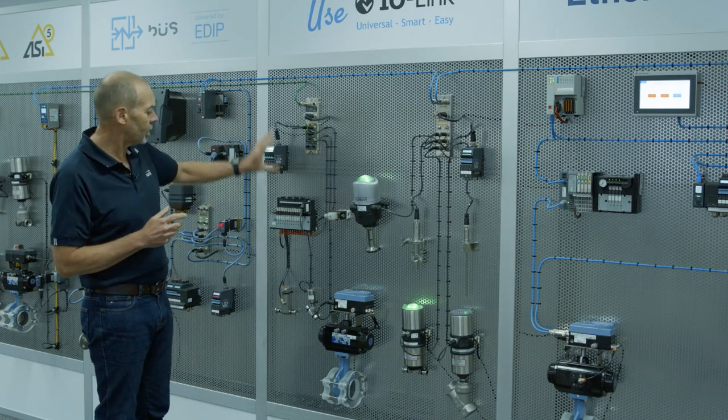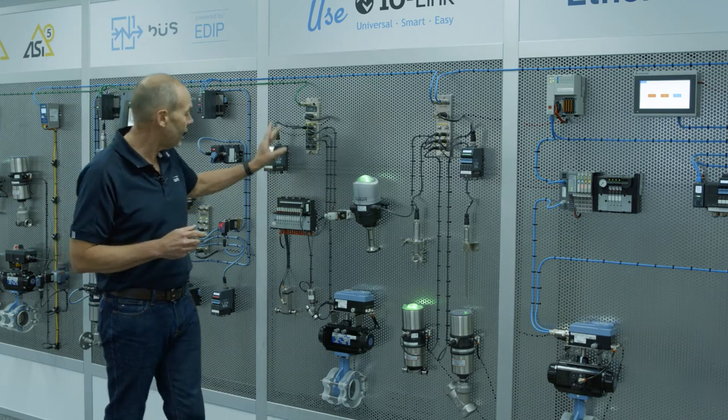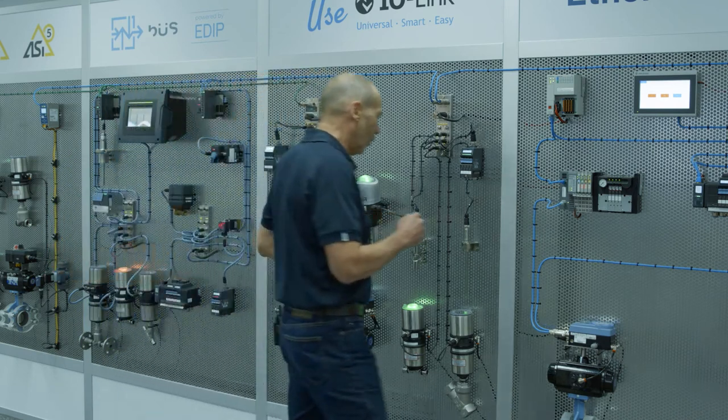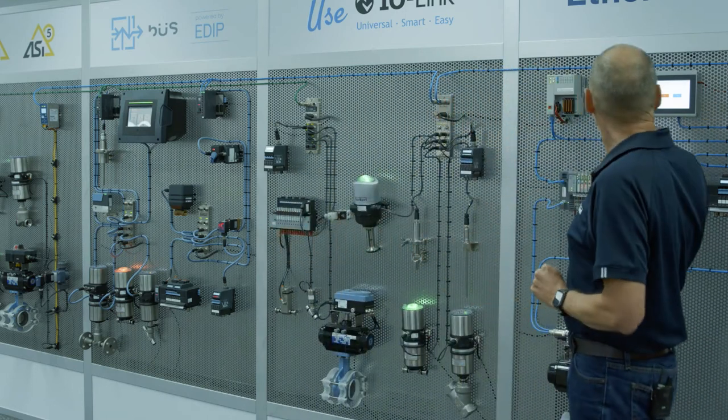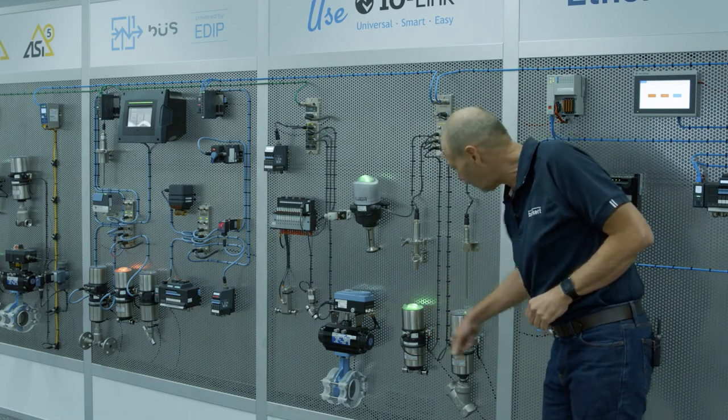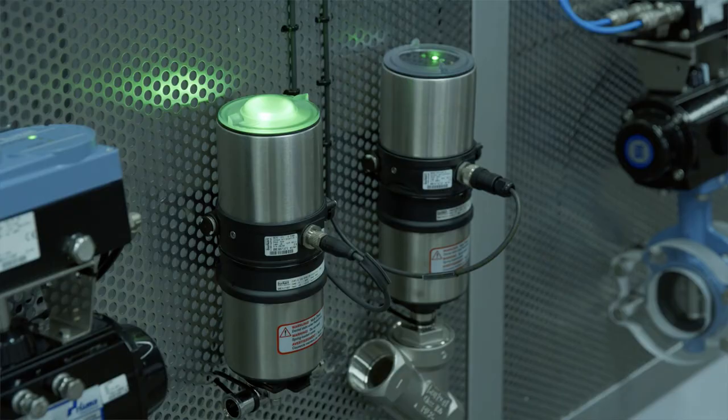As I mentioned, you can control all of these different devices, whether they be modulating valves, on-off valves, or control valves. To give you an example, I will just operate this 8691 head, which is on a modulating valve here from the Ethernet IP panel, and I can operate and open and close that.